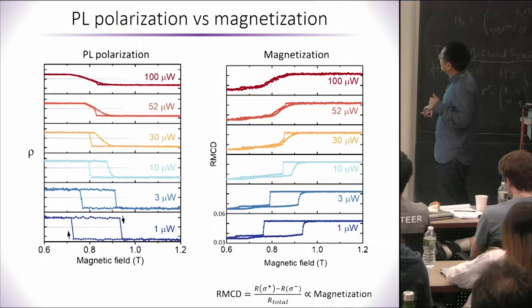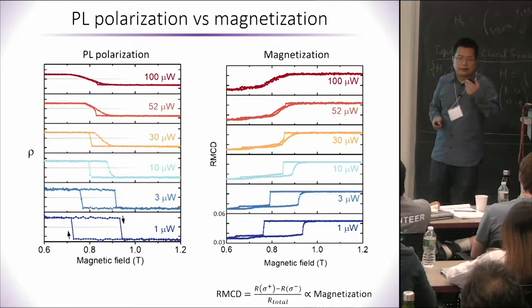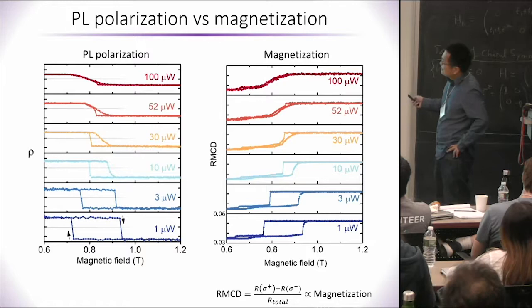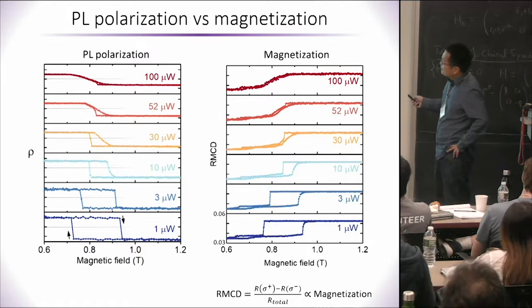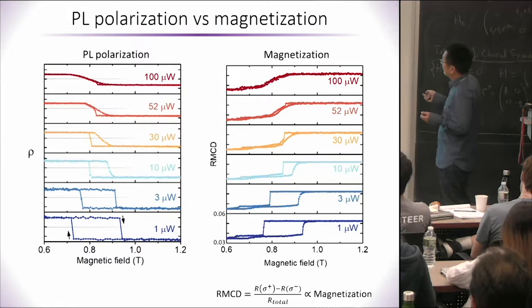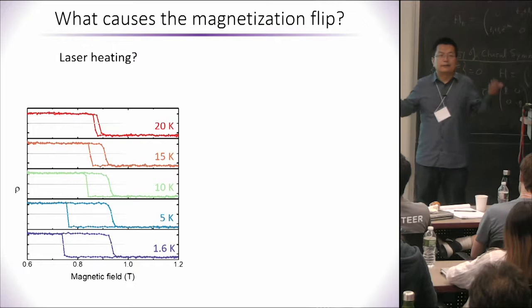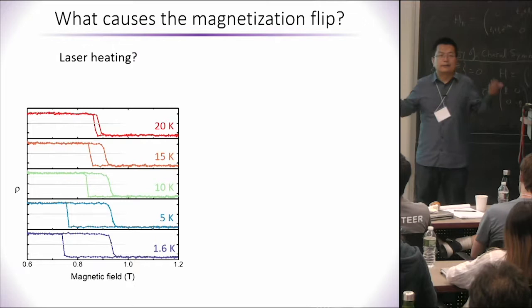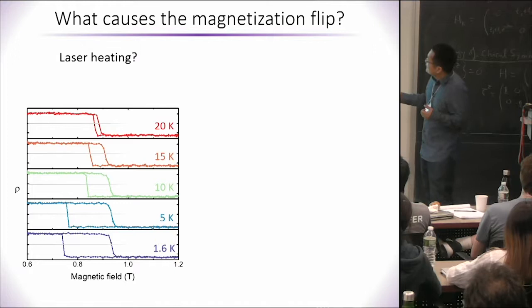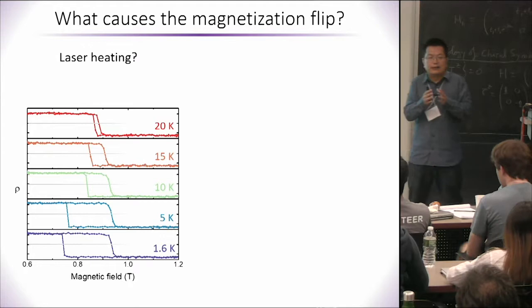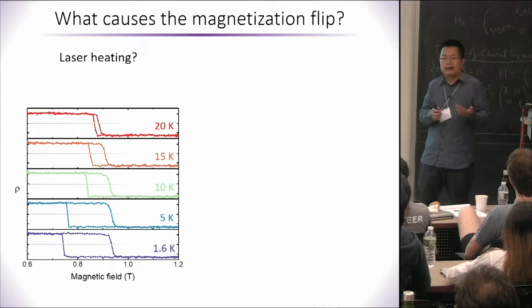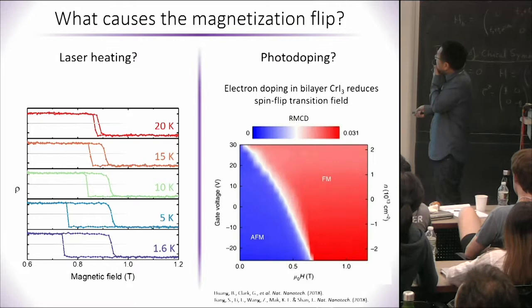To test whether it's just heating, we look at MCD — which you can think of as Kerr rotation — as a function of excitation power. Looking at the temperature dependence: physically warming up the system, the hysteresis loop does shrink. However, it doesn't look the same as when I increase the excitation power. What the data say is it's not as simple as just the heating effect. I think heating actually plays a role, but it's not the only effect.